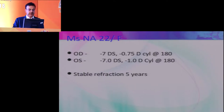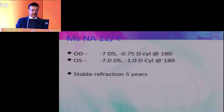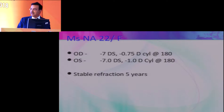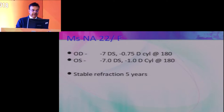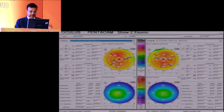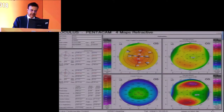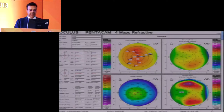Next case: a 22-year-old girl who had been worked up for LASIK at another center. She presented the day before her scheduled surgery. She had Ks in the 43s and 44s, good corneal thickness of 557 and 562. The anterior and posterior elevation maps and four maps look like this for the right and left eye. She has a correction of minus 7 with 0.5 cylinder. AC depth is only 2.56, so ICL is not possible. She was 22 with stable refraction for 5 years.